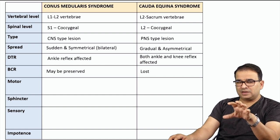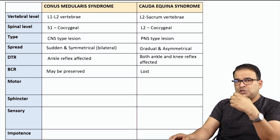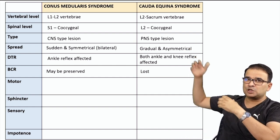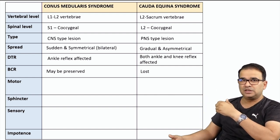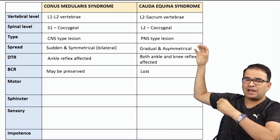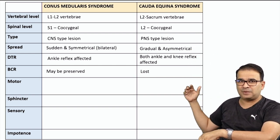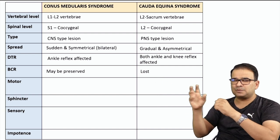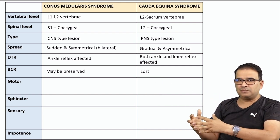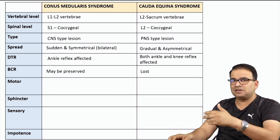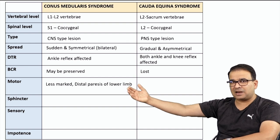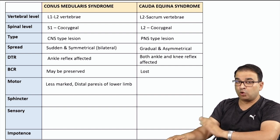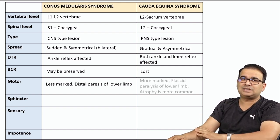Regarding motor involvement: the majority of lower limb muscles are supplied by the lumbar and sacral plexus. In cauda equina syndrome, nerve involvement from L2 to coccygeal means more muscles are affected — this is a lower motor neuron type of lesion leading to flaccid paralysis and muscle atrophy. In conus medullaris, there is paresis in the lower limb, but it is less marked and distal, because the distal muscles are supplied by the sacral segment.